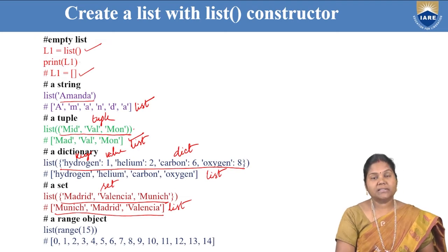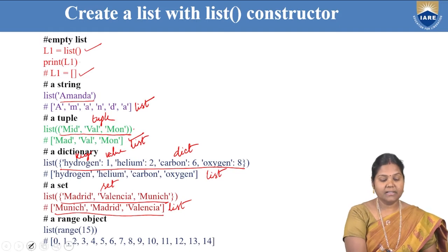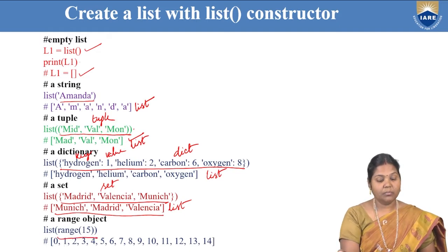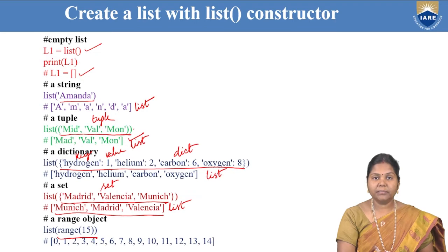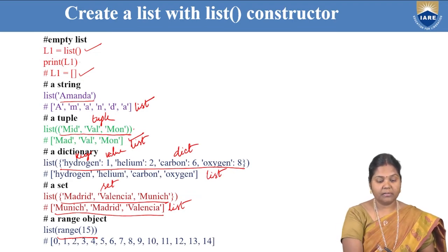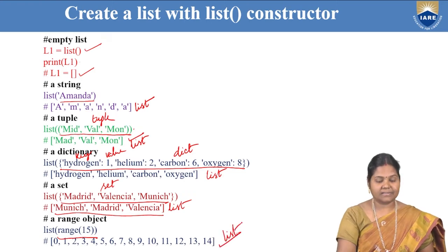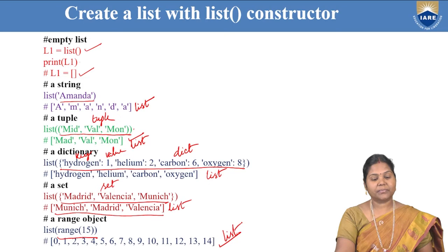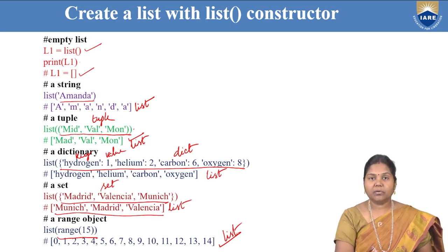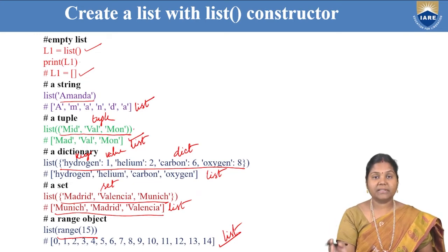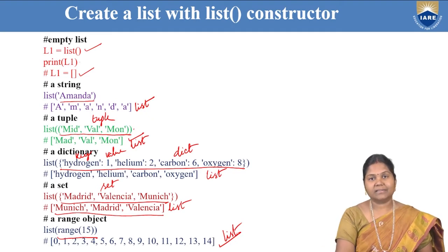You can also create a list from a range object. For example, list(range(15)) gives values from 0 to 14, all kept inside a list. So these are the different ways of creating a list — from a string, from a tuple, from a dictionary, from a set, and from a range of values — all using the list constructor.